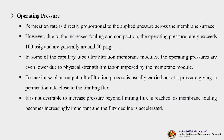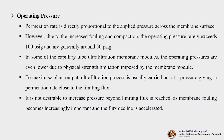The next parameter is operating pressure. Permeation rate is directly proportional to the applied pressure across the membrane surface. Since ultrafiltration is a pressure-driven process, the more you increase pressure, the more will be the permeation. However, due to increased fouling and compaction, the operating pressure rarely exceeds 100 psi and is generally around 50 psi. In capillary tube filtration modules, operating pressure is even lower due to physical strength limitations. The process is usually carried out at a pressure giving a permeation rate close to the limiting flux, beyond which membrane fouling becomes increasingly important and flux decline is accelerated.